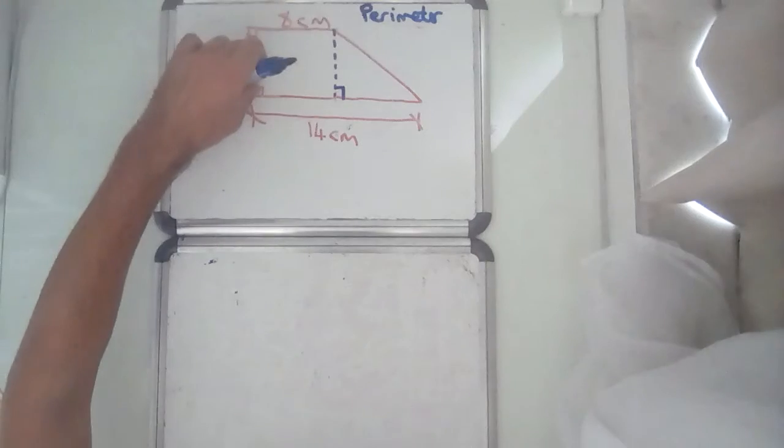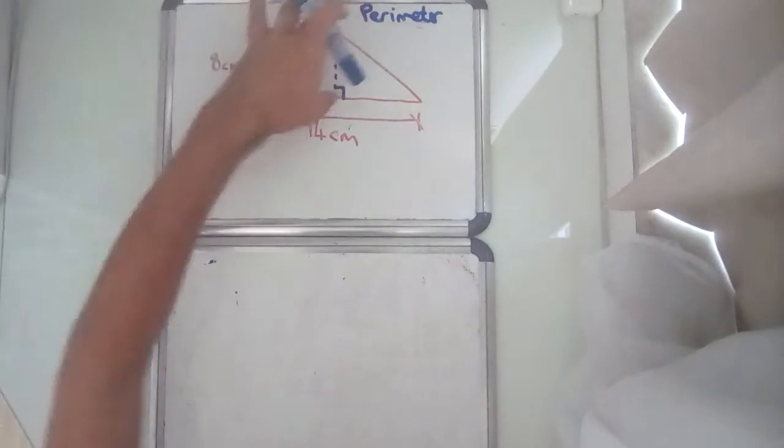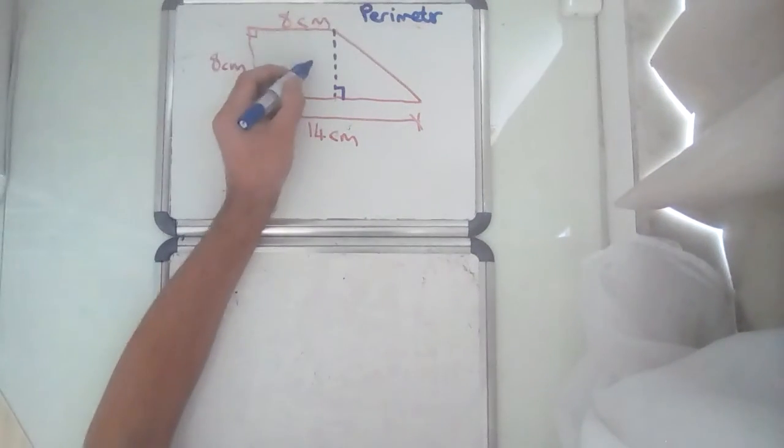This line is parallel to this, so my corresponding angles, these must be equal. Also, because that's parallel, this must be 8 centimetres.